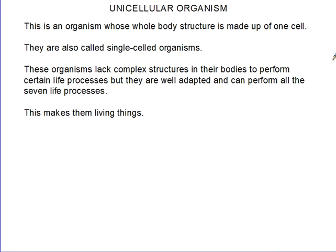Now, on to today's lesson. We are going to talk about how unicellular organisms are well adapted to life and how they operate, since they do not have complex structures like multicellular organisms do. Like humans, multicellular organisms are made up of millions of cells. But for unicellular organisms, their whole body is made up of just one cell. These organisms lack complex structures in their bodies to perform certain life processes, but they are well adapted and can perform all seven life processes. This makes them living things.